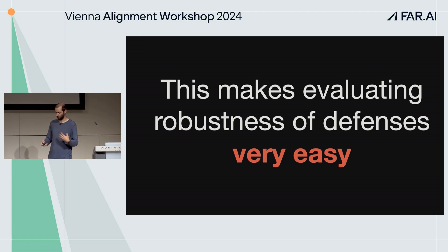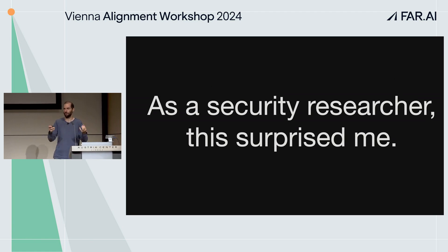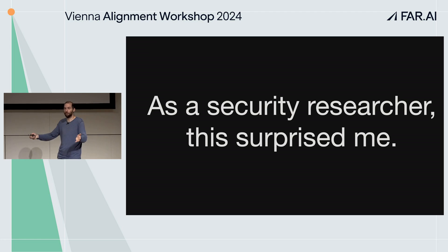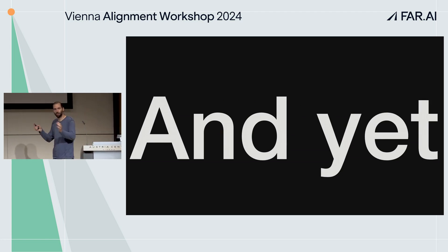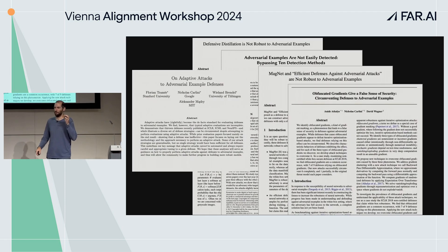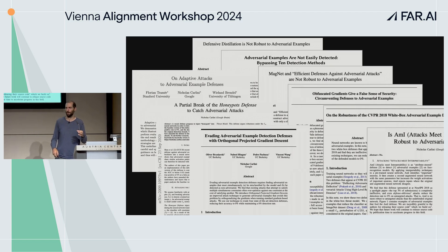As a security researcher, this surprised me. You can't do this for standard security binaries — if someone gives me a compiled C++ binary, I can't just perform gradient descent on it to find all the bugs. That means it's really hard to check if a C++ binary has bugs because you have to ask humans to find them one by one. But for a machine learning model, you can essentially find them all automatically. And yet, despite the fact that it was trivial to find all the bugs in principle, the community had a very hard time coming up with actually effective defenses.